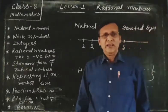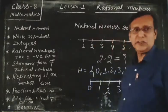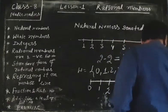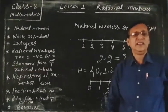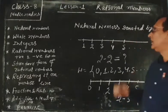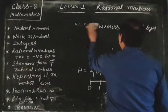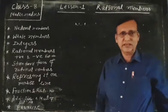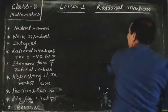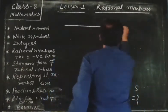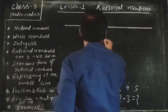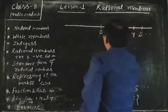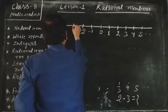But again this group of numbers was insufficient as it did not have answers to questions like 2 minus 3. So again there arose a question that natural numbers and whole numbers are not sufficient. So the group was extended by adding the negatives of the natural numbers. We place 0 in the middle of the number line, with 1, 2, 3, 4, 5 on the right and minus 1, minus 2, minus 3 on the left.